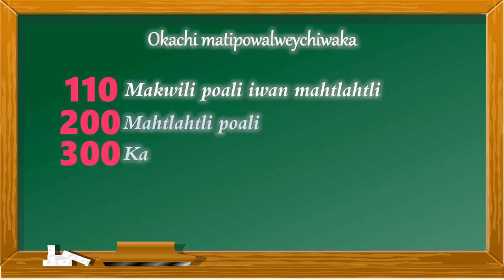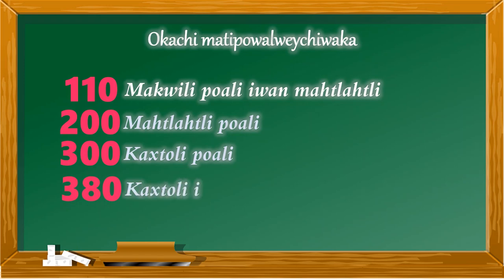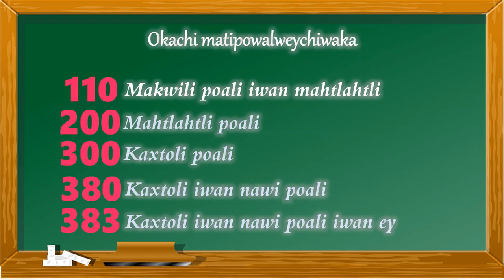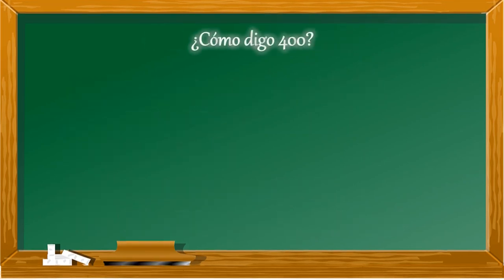Para 300: cachimatipoali, lo que serían 15 de 20. Para 380: cachimatipoali iwamachiknawi. Para 383: cachimatipoali iwamachiknawi, lo que serían 19 de 20. Y así de la misma forma hasta llegar al 400.